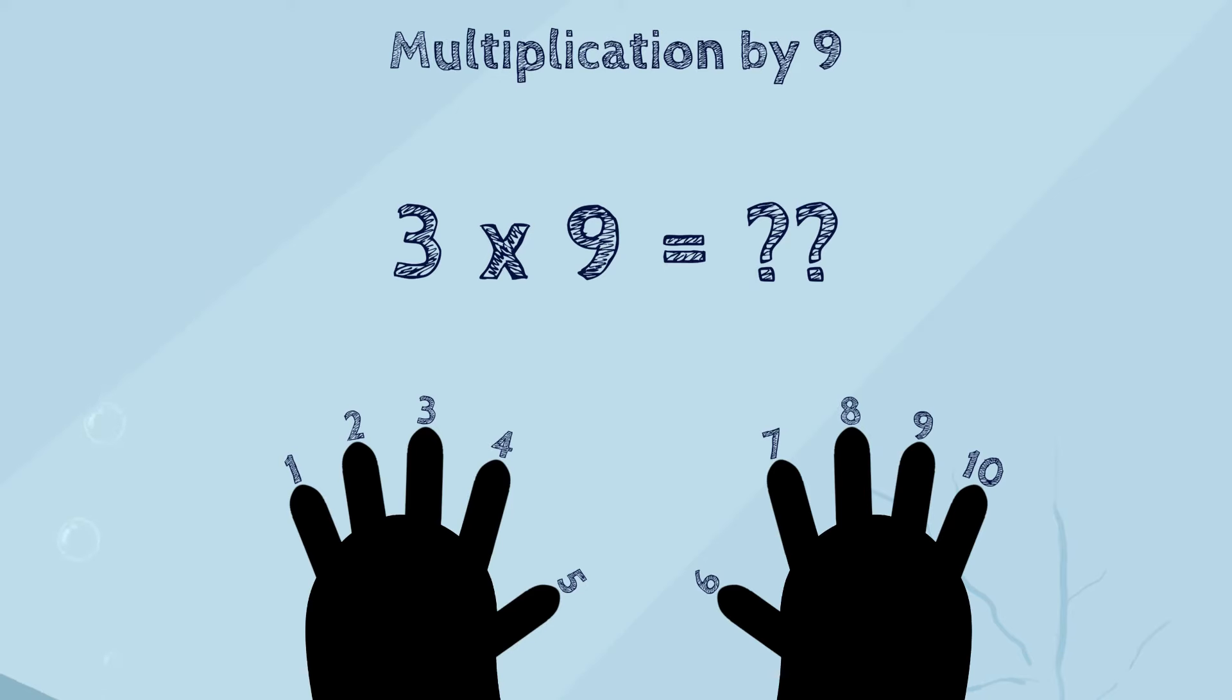So, count the numbers on the left hand until you get to 3. Start on the left side of the hand. 1, 2, 3. Fold that finger down.